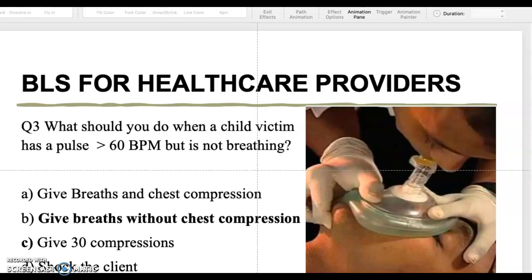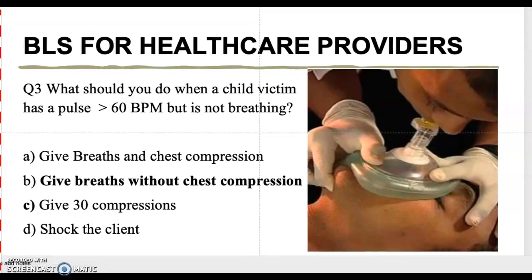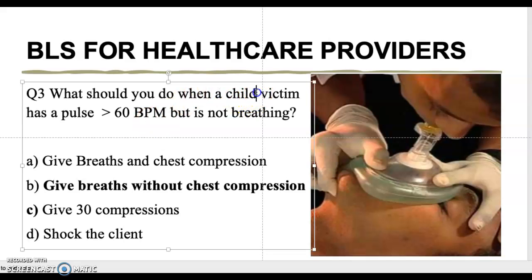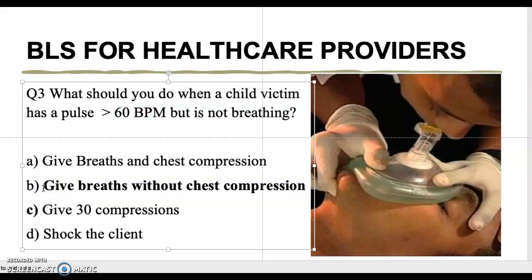Question number three: what should you do when a child victim has a pulse greater than 60 beats per minute but is not breathing? A — give breaths and chest compressions; B — give breaths without chest compressions; C — give 30 compressions; D — shock the client. Since the child has a pulse, you don't give compressions. You give breaths without chest compressions. B is the correct answer.